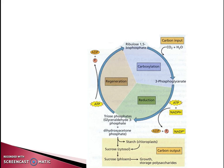Triose phosphate is exported from the Calvin cycle and converted to starch in the chloroplast, or exported to the cytoplasm for the formation of sucrose. Then comes the regeneration phase, where the starting material — the CO2 acceptor molecule RuBP — is regenerated. A complex series of reactions rearranges the carbon skeletons of the G3Ps (triose phosphates), and 3 RuBP molecules are formed. ATP is utilized, and about 10 enzymatic reactions occur in this regeneration phase.